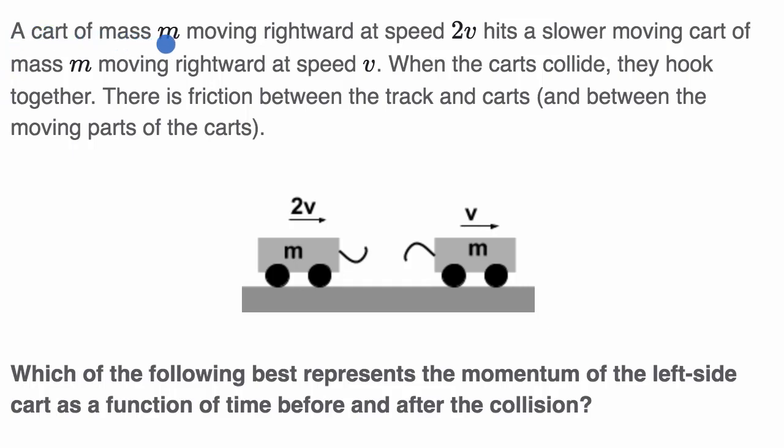A cart of mass m moving rightward at speed 2v hits a slower moving cart of mass m moving rightward at speed v. When the carts collide, they hook together.